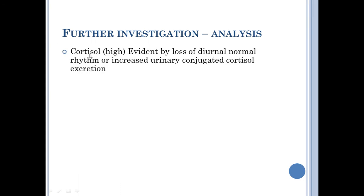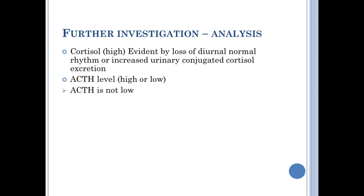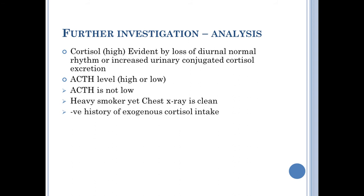For further investigation, we measured cortisol level and found it was high using a 24-hour urine sample, with increased urinary free cortisol excretion. We then investigated ACTH and found it was not low, so this rules out a primary adenoma or carcinoma of the adrenal cortex. We noted he is a heavy smoker, so we did a chest X-ray which was clear — ruling out ectopic ACTH secretion such as bronchial carcinoma. From the history, he gave no information about exogenous corticosteroid intake, so this is not an iatrogenic cause, which is actually the most common cause in current clinical practice.